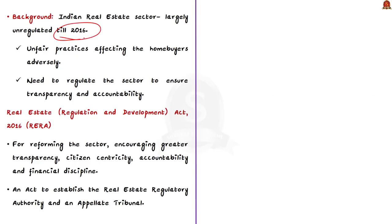The Indian real estate sector was largely unregulated till 2016. This led to many anomalies resulting in various unfair practices which ultimately affected home buyers. So in order to bring transparency and accountability to the real estate sector, an act was passed — the Real Estate Regulation and Development Act 2016, with the short form RERA. Through this act, we got the country's first real estate regulator.